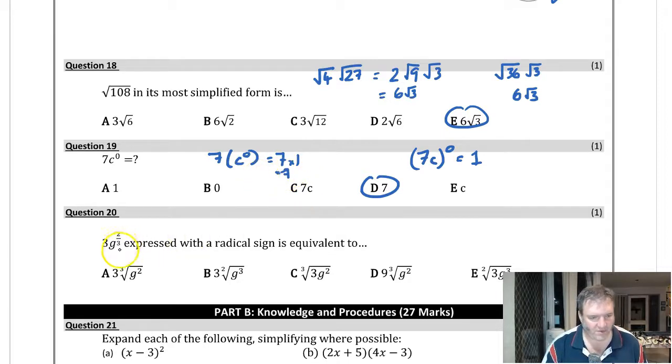Lucky last. 3g to the power of 2 thirds expressed with a radical sign. Well, the 3 doesn't change. G to the 2 thirds, so it is the cube root. The number in the denominator is what root we're taking. 3 times the cube root of g squared. And we should see 3 cube root of g squared. That is answer A.